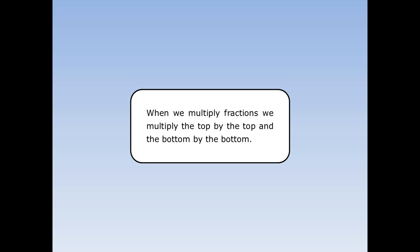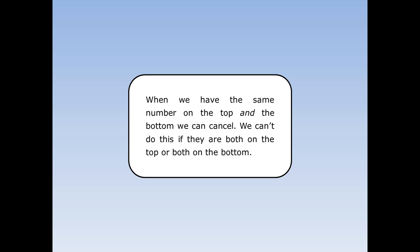To summarize: when we multiply fractions, we multiply the top by the top and the bottom by the bottom. When we have the same number on the top and the bottom, we can cancel. We can't do this if they're both on the top or both on the bottom.